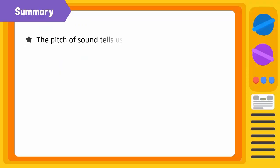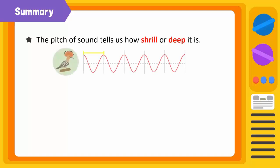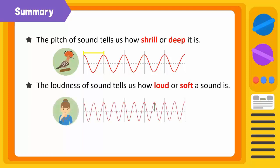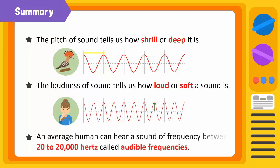In this video, we learnt about the pitch and the loudness of sound. The pitch of a sound tells us how shrill or deep it is, and it depends on the frequency of the sound waves. The loudness of sound basically tells us how loud or soft a sound is, and it depends upon the amplitude of the sound waves. An average human can hear a sound only if its frequency lies between 20 Hz and 20,000 Hz — these are called audible frequencies.